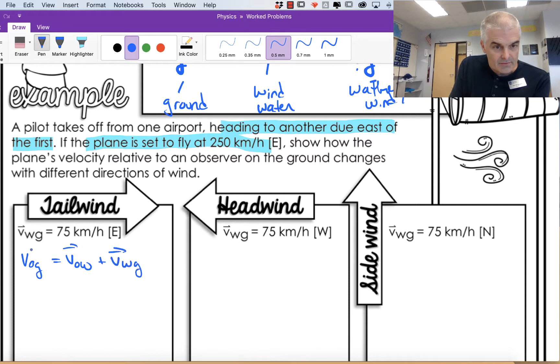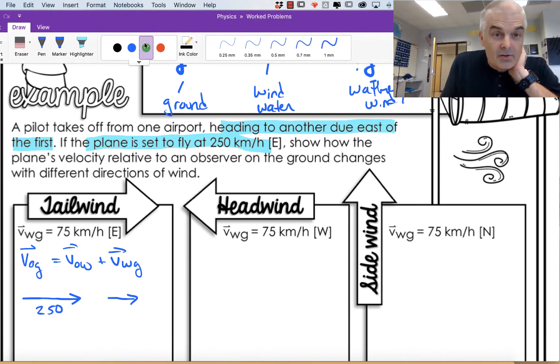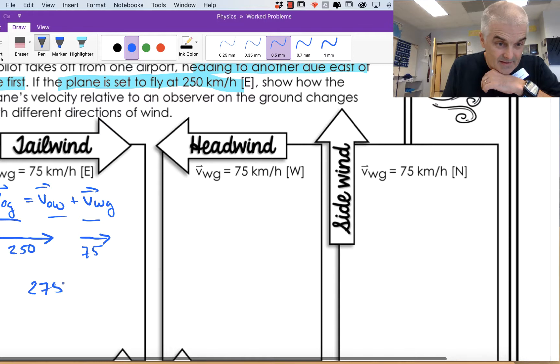250 kilometers per hour to the east, and the wind is going at 75. So this is a tailwind. The velocity of the object with respect to the ground, how fast is he really going? Hopefully you see this. He's going to go 275 to the east. That's it. Tailwind.